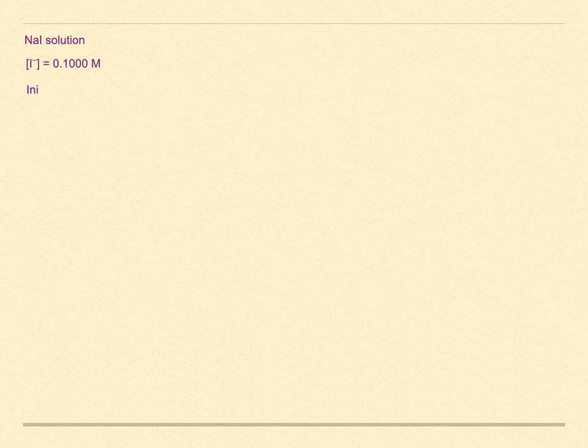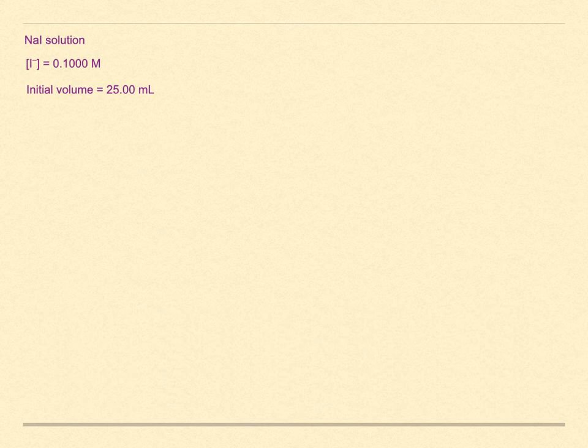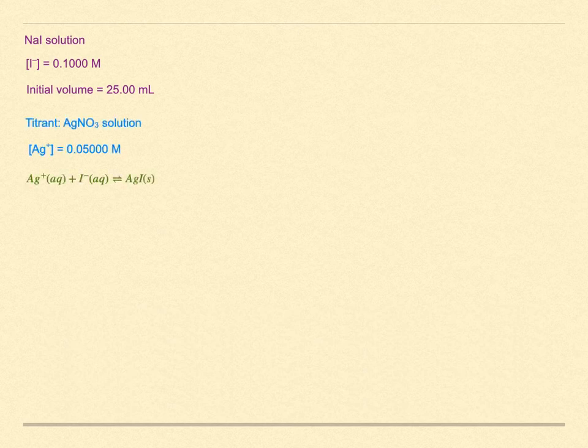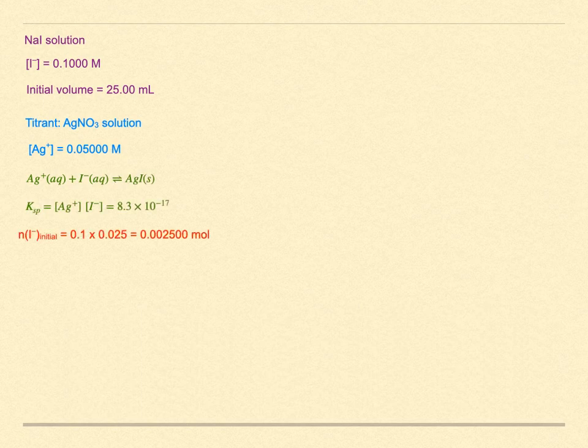The calculations are quite straightforward. Consider a solution of sodium iodide, 0.1 molar, and a volume of 25 milliliters. If we wanted to titrate it to determine the iodide concentration, we could use the reaction with silver ions that would precipitate out silver iodide. We could use a solution of silver nitrate, 0.05 molar. The Ksp for silver iodide is 8.3 times 10 to the minus 17. The reaction to form AgI has a very large equilibrium constant, and each drop of added titrant will convert completely to the solid precipitate. Any silver that remains in the solution will be a result of this sparingly soluble AgI.